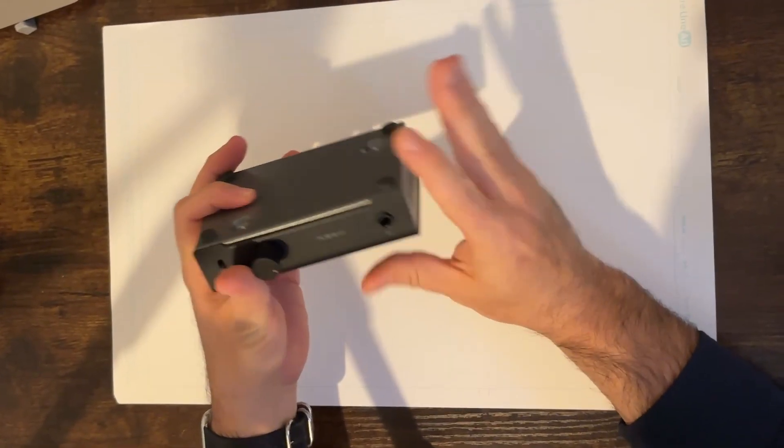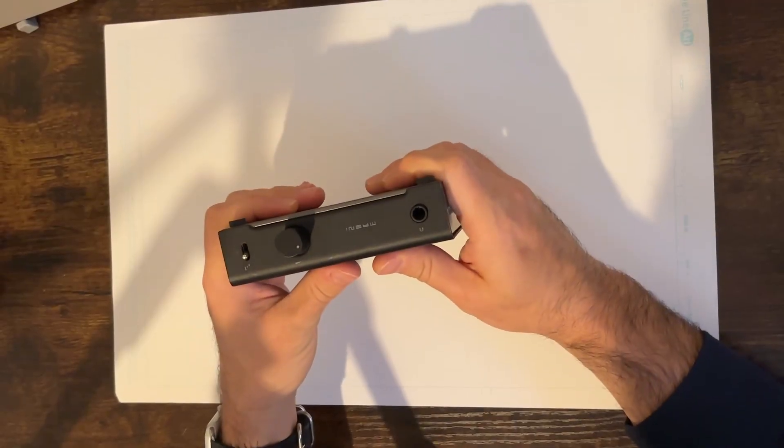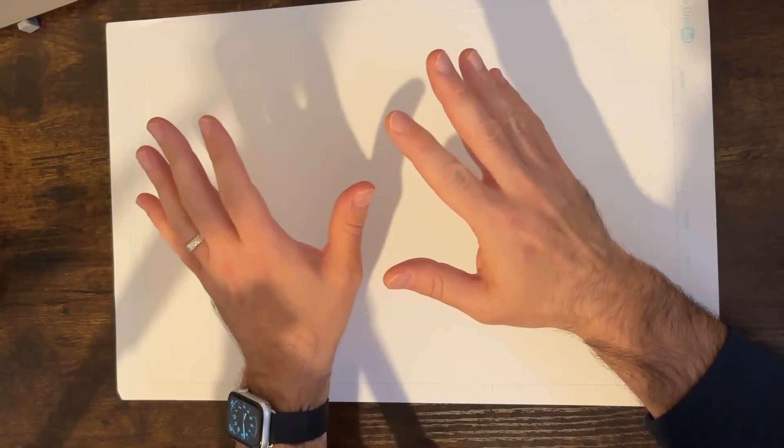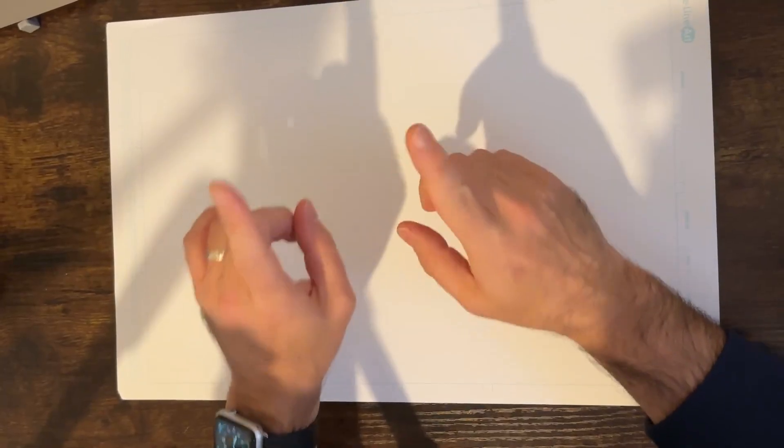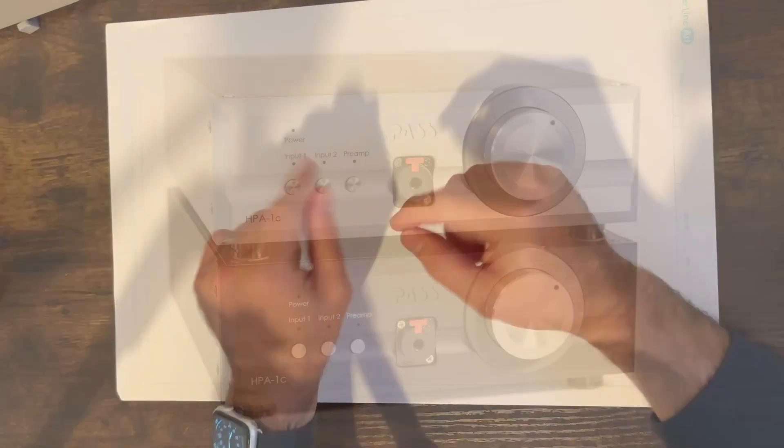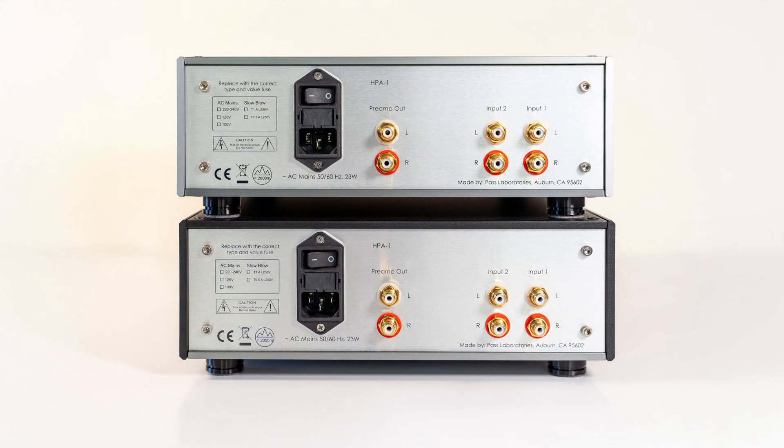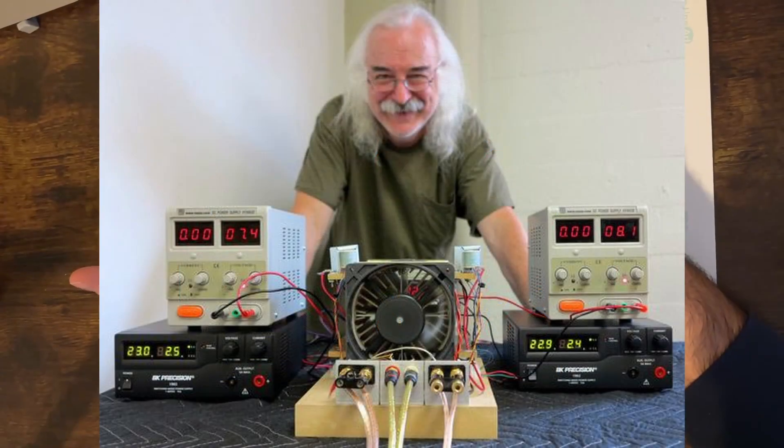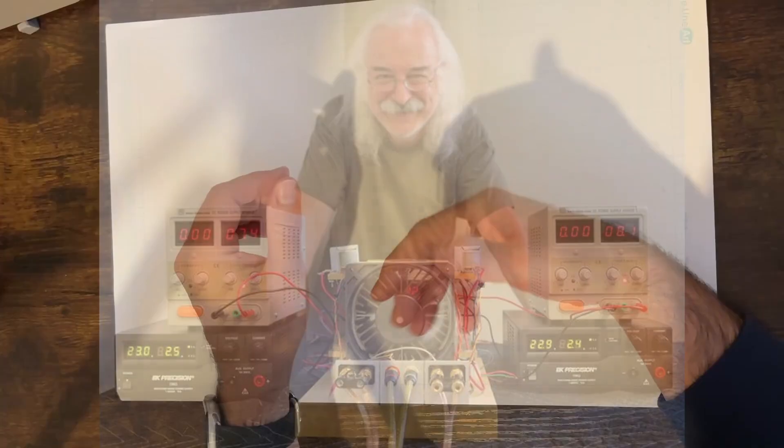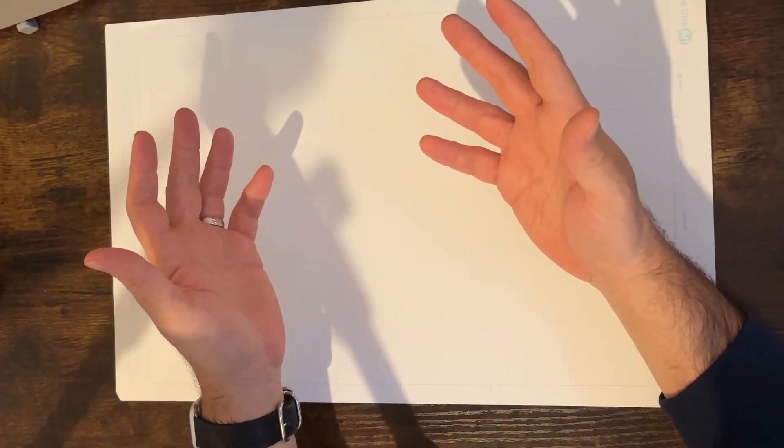Or maybe you're saying, I don't want to compromise the purity of my signal path or something. Listen. Listen, man. If it's good enough for Nelson Pass, it's good enough for you. Look, here's his $4,000 HPA1C. You see what it has on the back? Yeah, those are preamp outputs. What, are you better than Papa Nelson Pass, hallowed be his name? Maybe you are. I don't know. But put some dang preamp outputs on your headphone amp anyway.